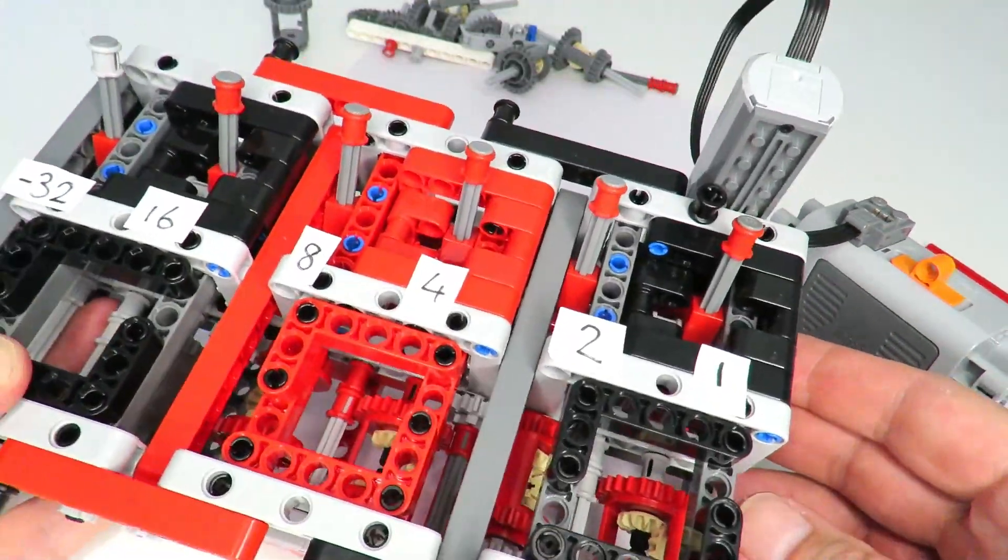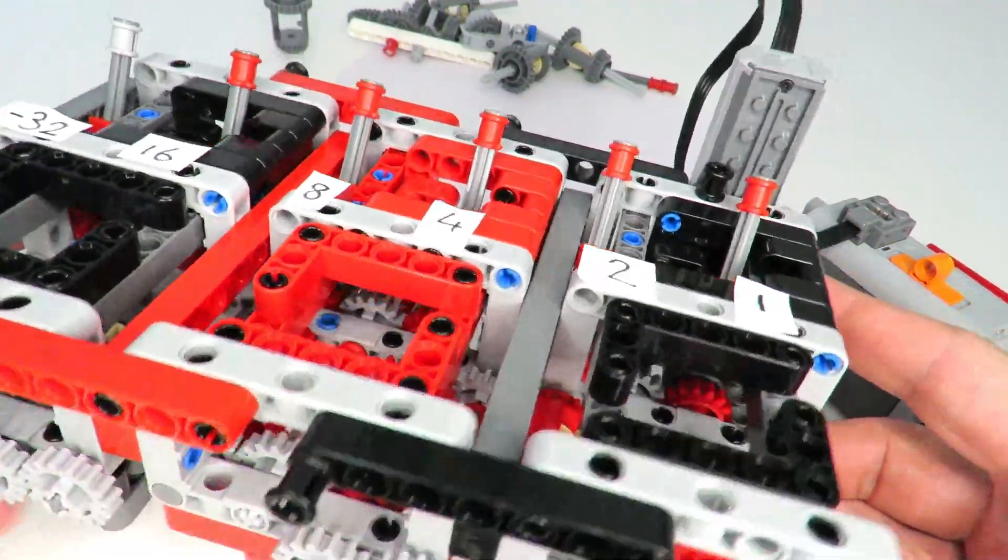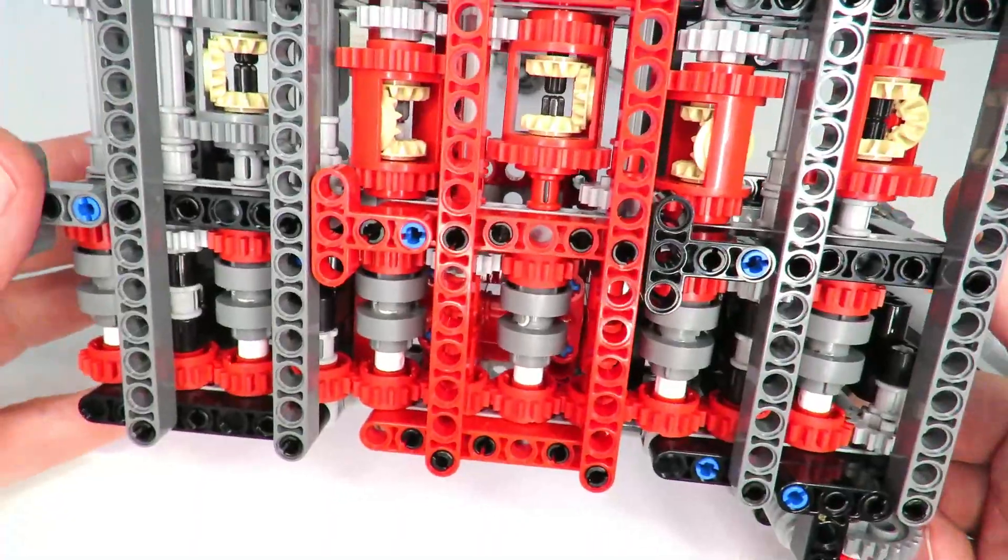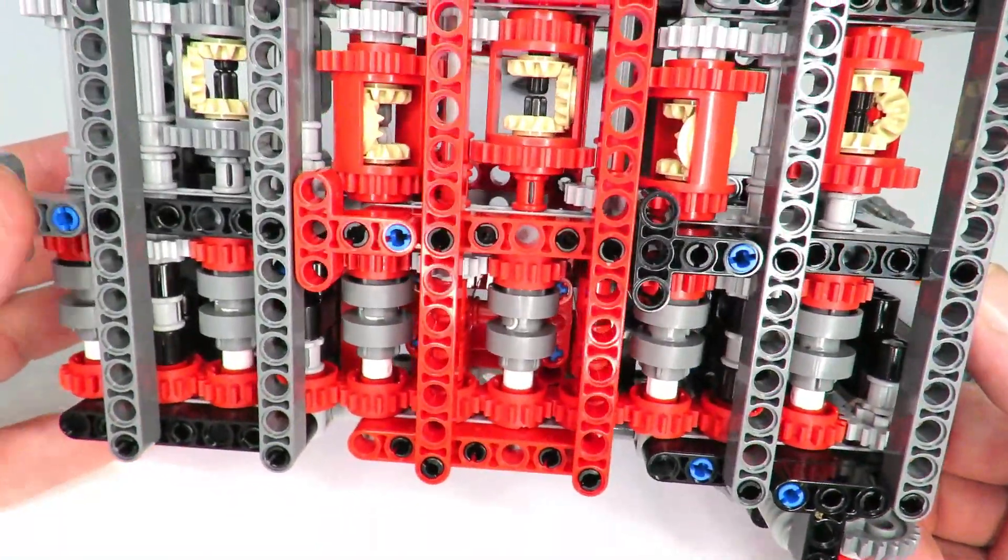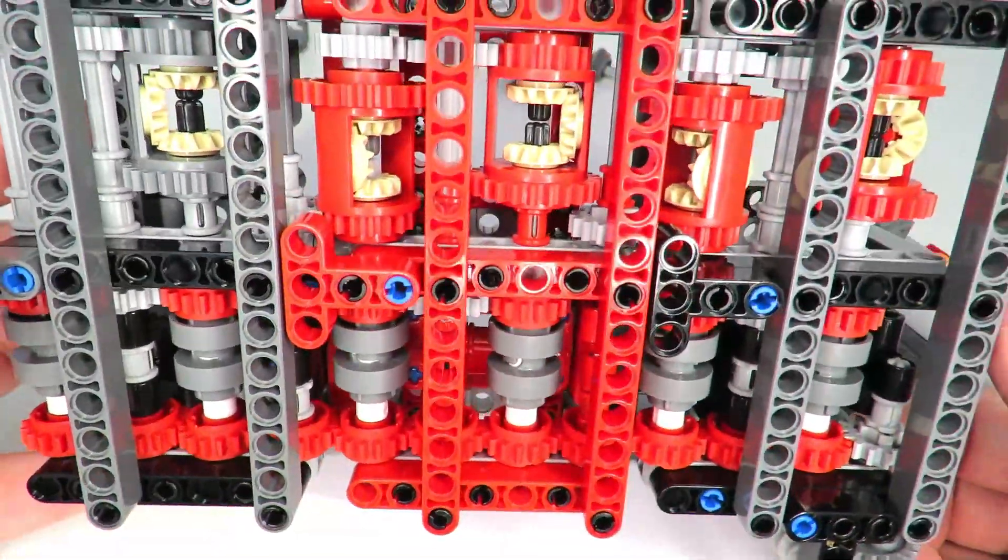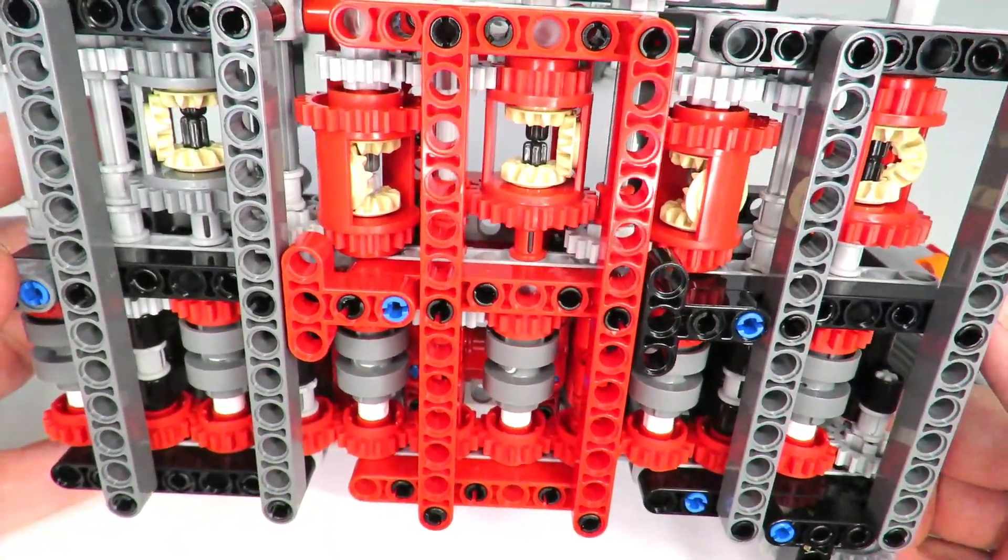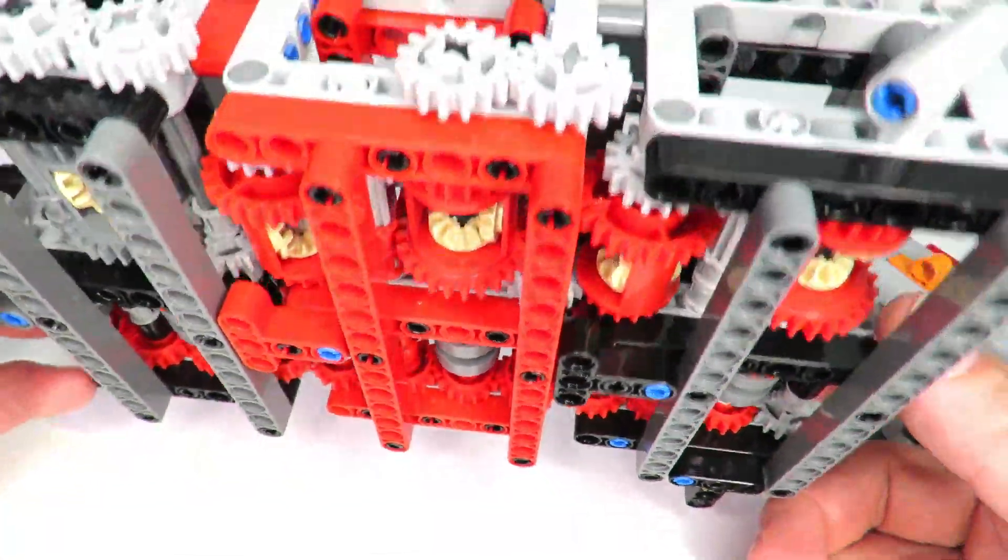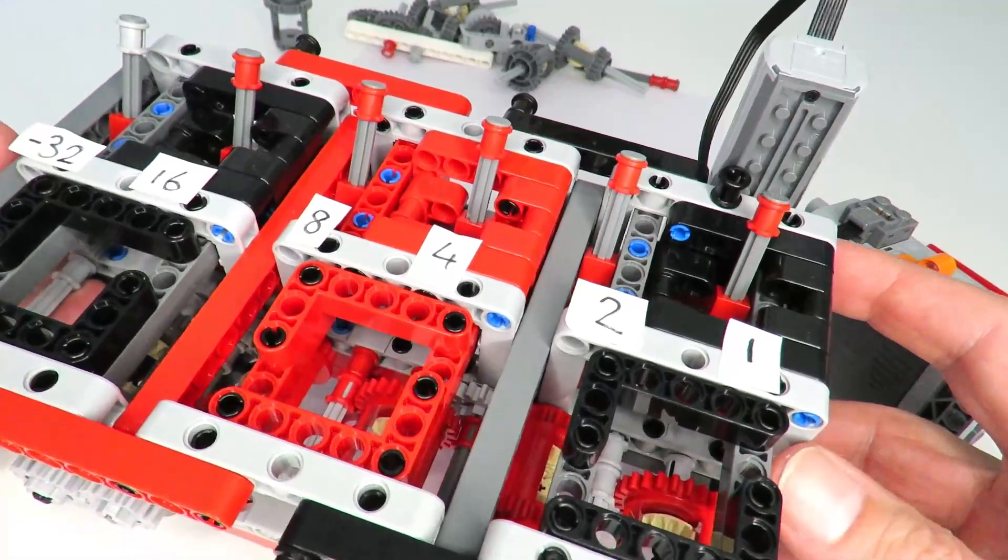So this unit consists of six different levers at the bottom there that control six different gearing selectors, and then that is fed through five differentials in order to create the 63 possible gearing ratios.